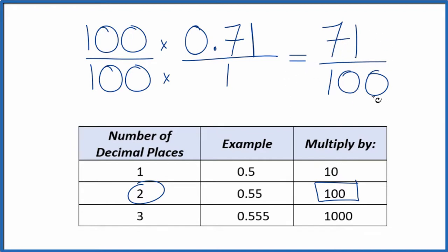We can't simplify this any further. If you divide 71 by 100, you'll get the decimal 0.71.